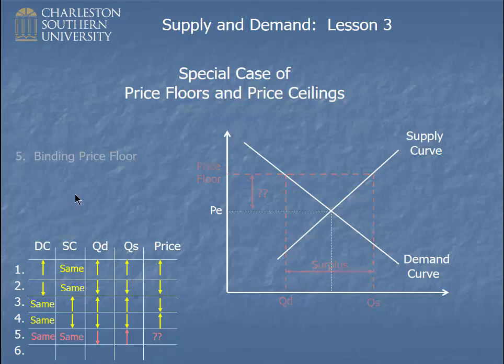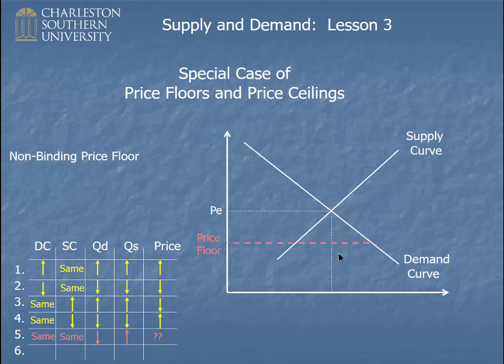Now let me show you a non-binding price floor. If you had a rule that set the price floor down below the equilibrium price, the rule says the price can be above the floor — it just may not be below. Since the natural order of affairs is trying to get the price to equilibrium, and that's above the price floor, the law isn't violated and we just have equilibrium here — nothing else happens. So that would be a non-binding price floor.